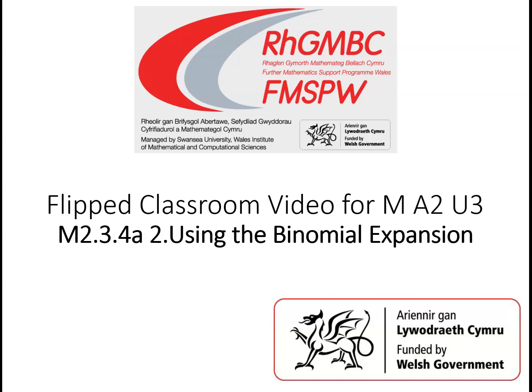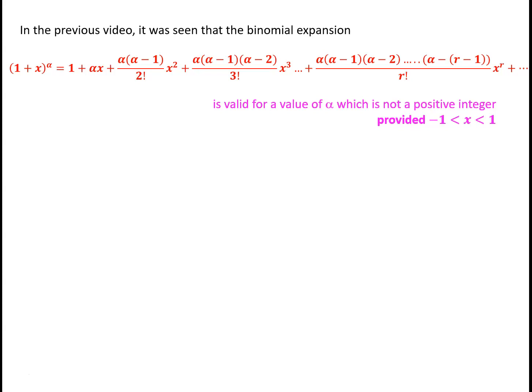In this video, we will look at how to use the generalized binomial expansion that was introduced in the previous video. We saw that if the value of x lies between minus 1 and plus 1, then the expansion of 1 plus x to the power alpha equals 1 plus alpha x plus alpha times alpha minus 1 over 2 factorial times x squared, plus alpha times alpha minus 1 times alpha minus 2 over 3 factorial times x cubed, and so on, and this is valid for values of alpha which are not positive integers.